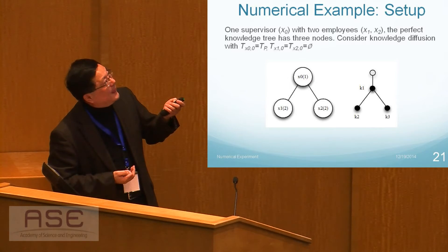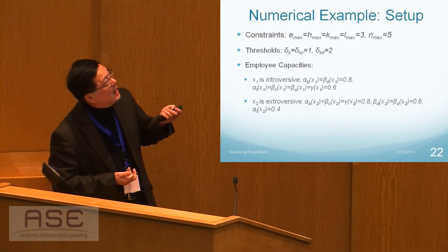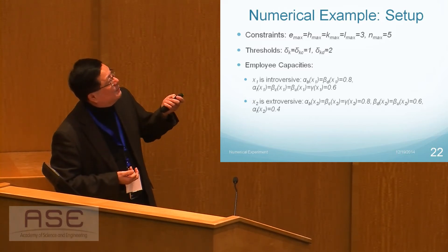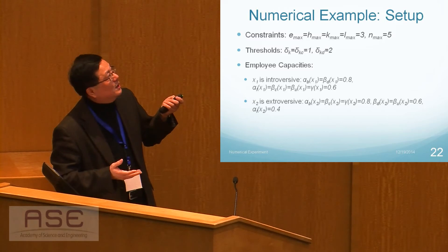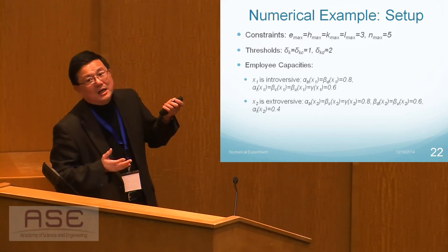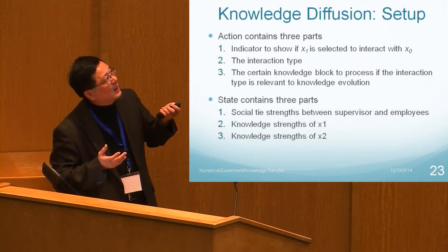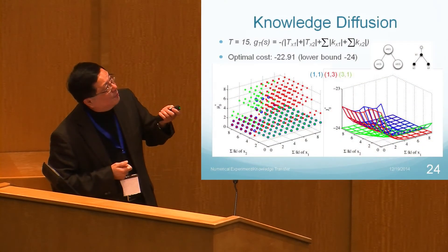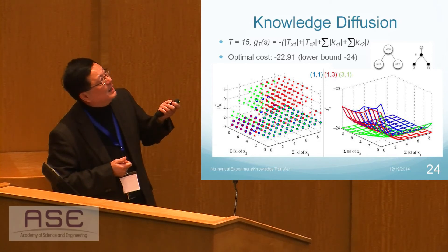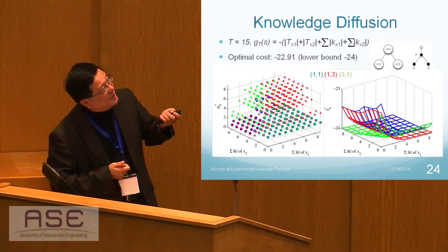We can see that for different people with different personalities, there are quite different knowledge diffusion properties and effectiveness of knowledge transfer. The evolution of knowledge during the diffusion process involves jumps, corresponding to different states via direct transfer. Our model also incorporates the complexity that until a certain degree of social connection strength is reached, knowledge cannot really be transferred.